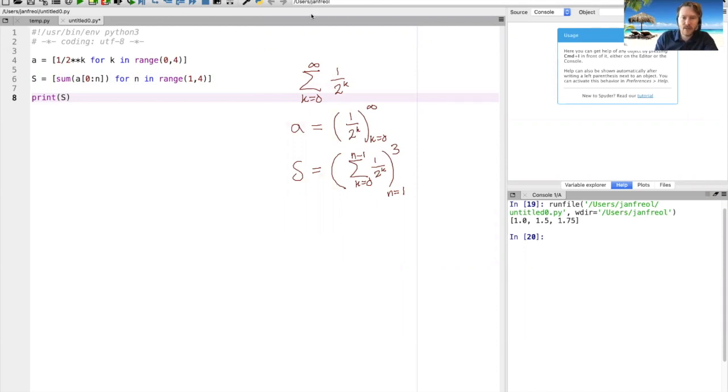This partial sum or the sequence S here contains first the partial sum where I put N equals one, so that's the zeroth partial sum, then you have the first partial sum and then the second and so on. If this was infinity here...